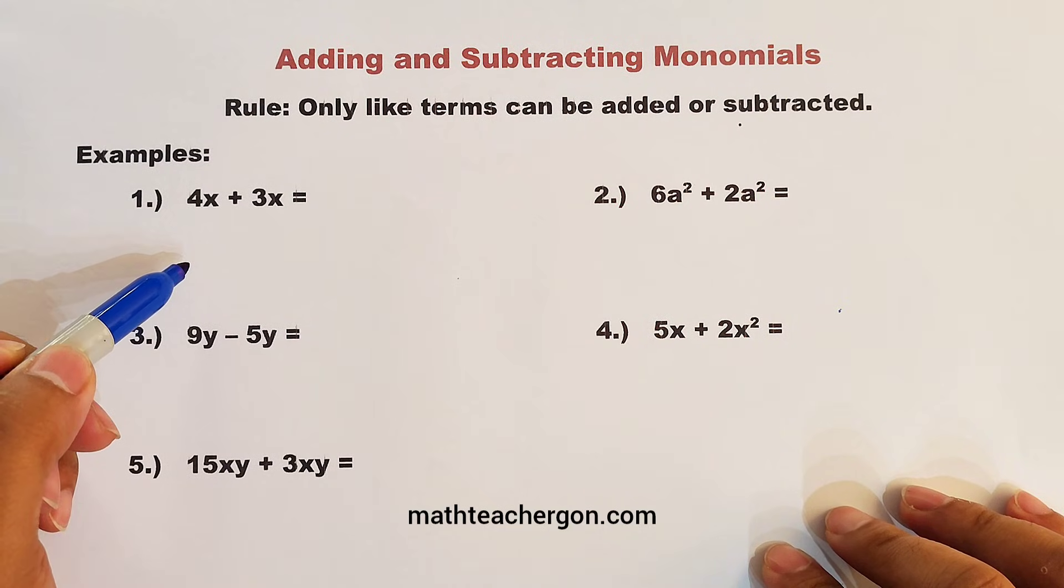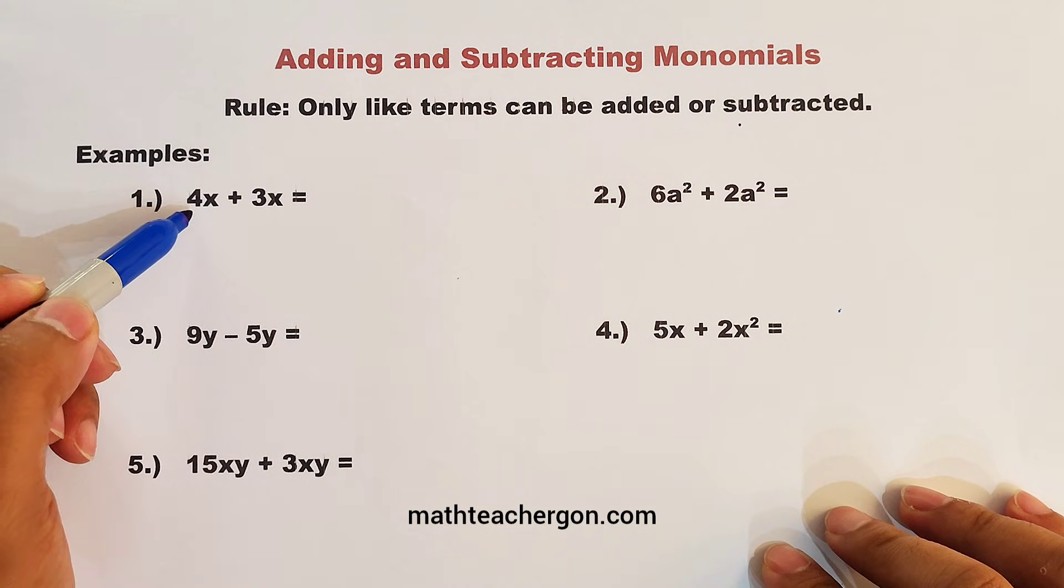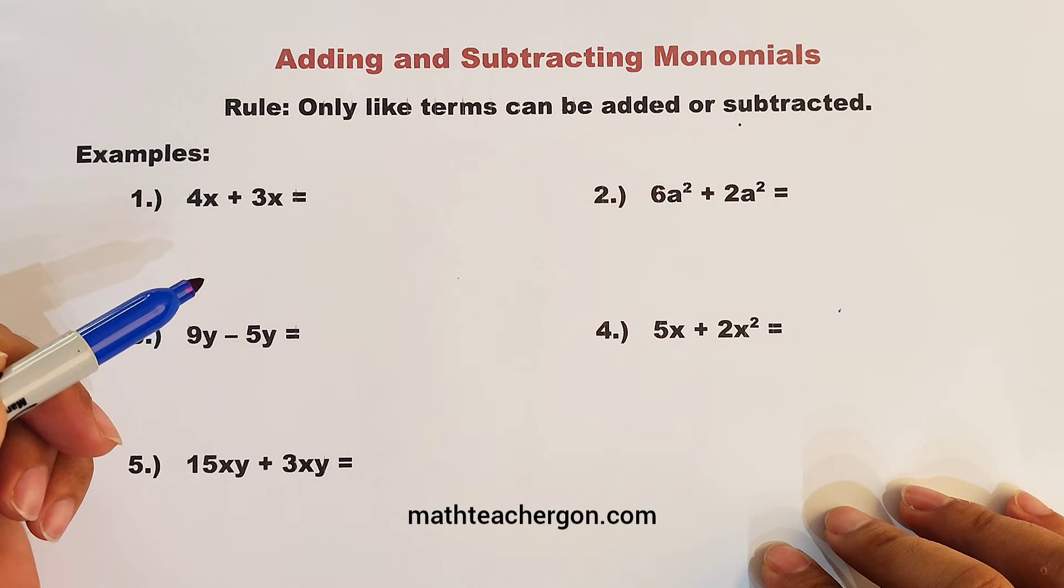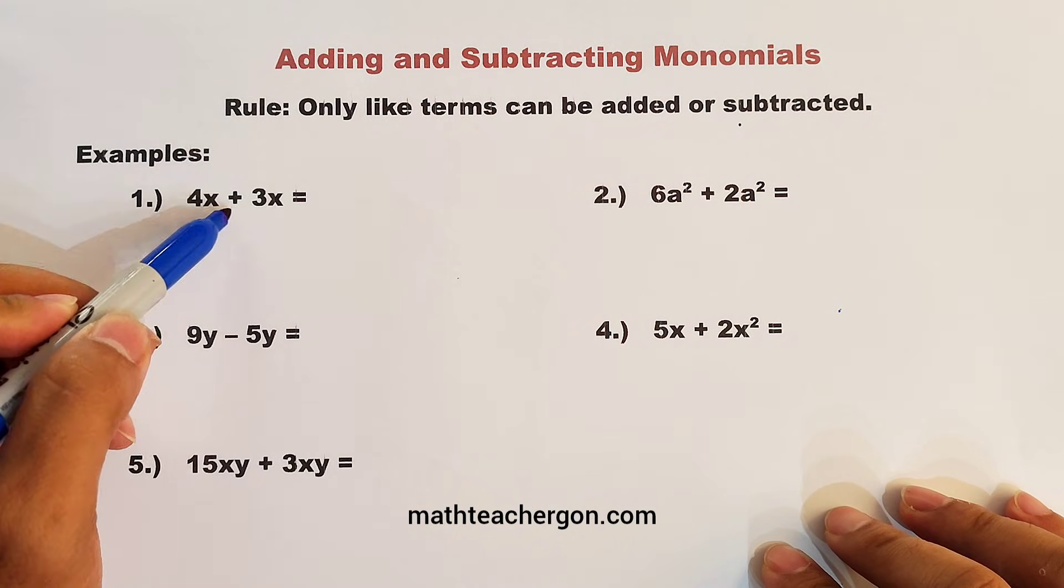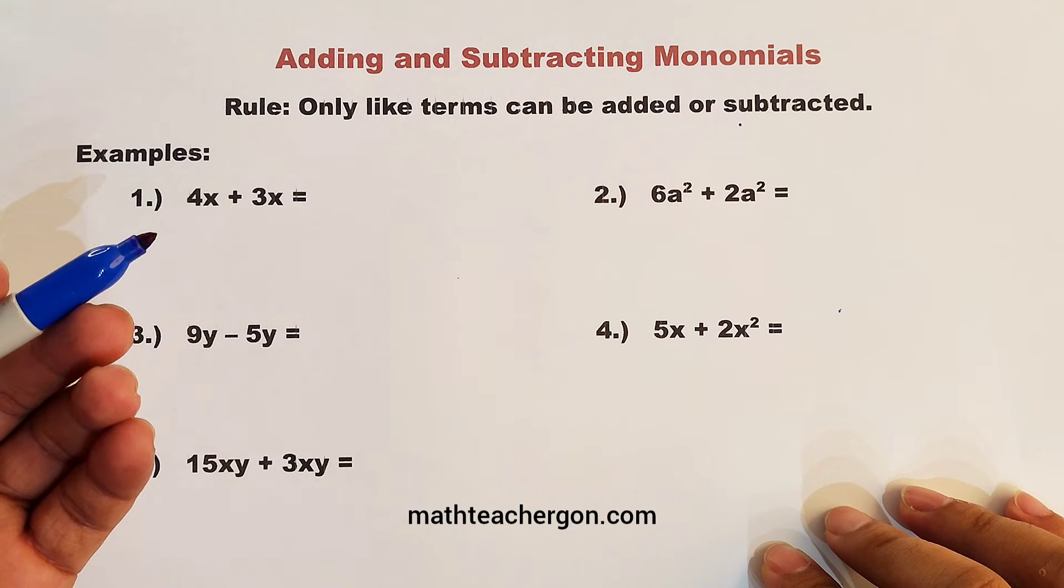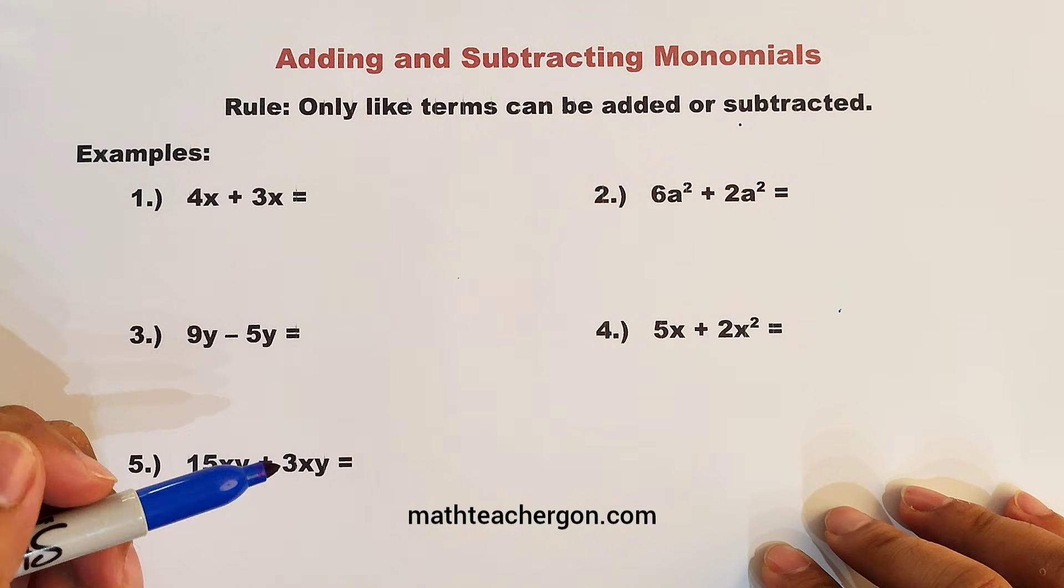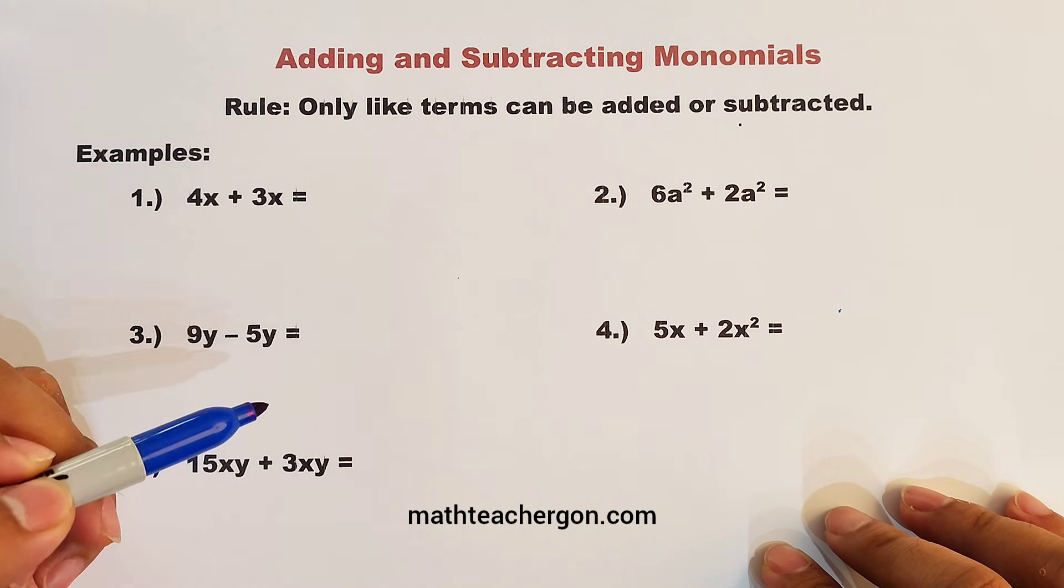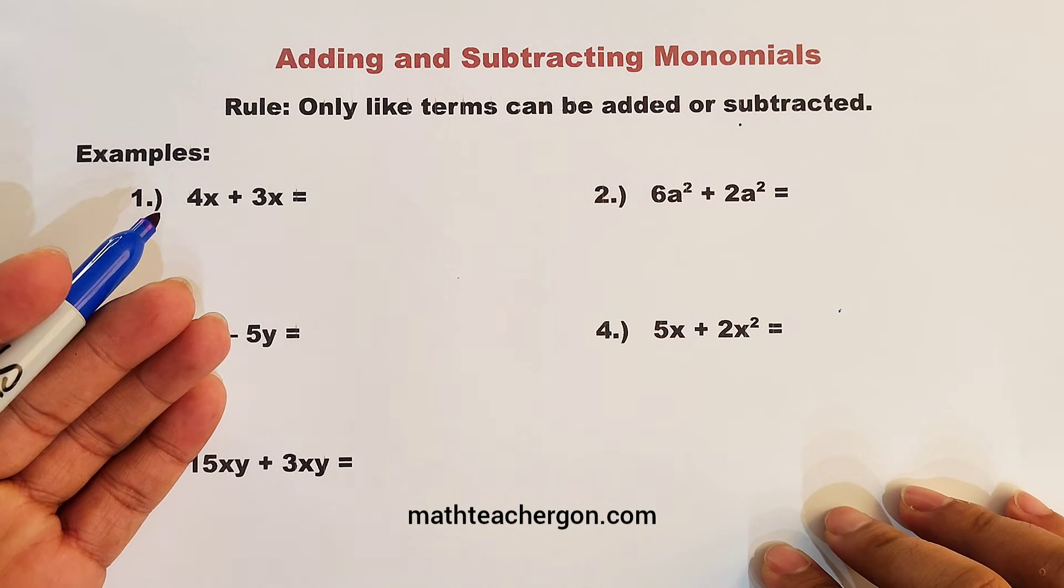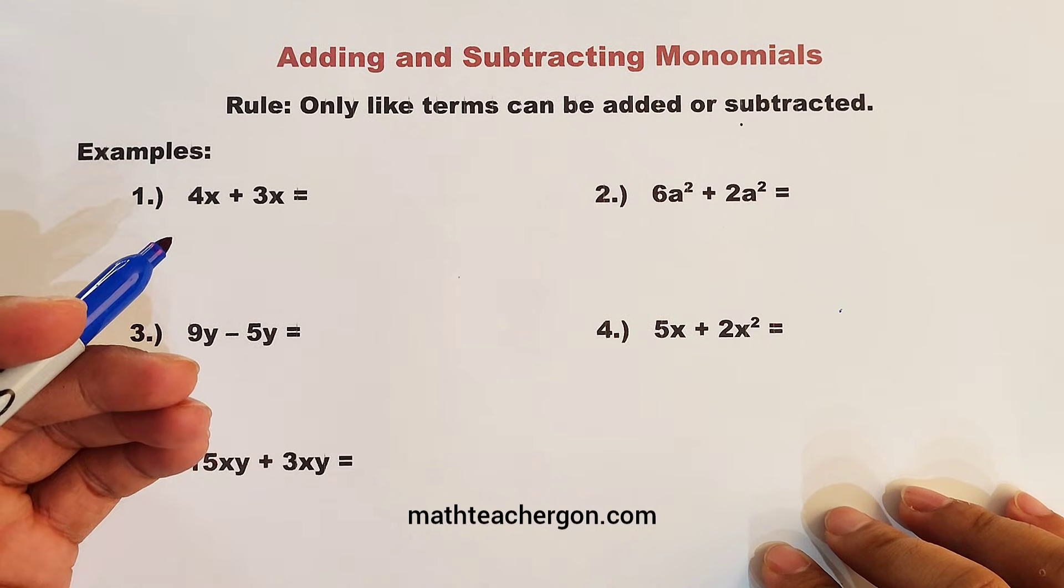Let's have example number one. We are given 4x and 3x. So the question here, are they like terms for us to perform the addition? So how can we consider whether they are like terms? Basically, if they have the same variable and the same exponent.